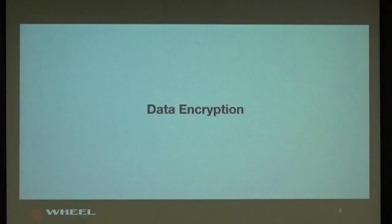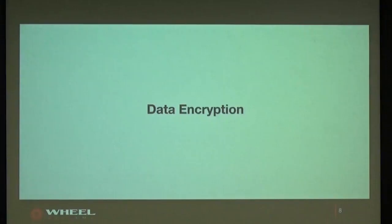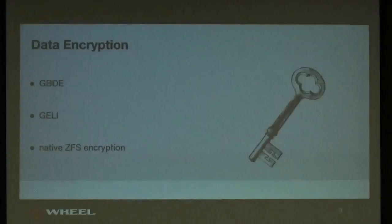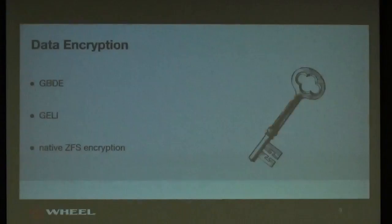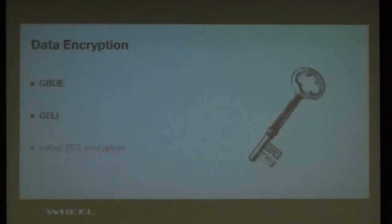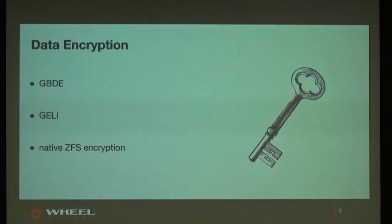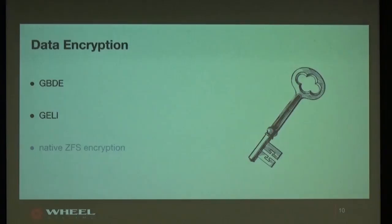First, data encryption. One of our assumptions is that none of the customer data should be unencrypted. In FreeBSD, we have three different encryption methods: GELI (which I'll call GDD), Jelly (GELI), and native ZFS encryption. Unfortunately, native ZFS encryption is still not in FreeBSD at the time of this presentation. For future appliance development it's worth considering, but for today we will look into two encryption methods: GDD and Jelly.